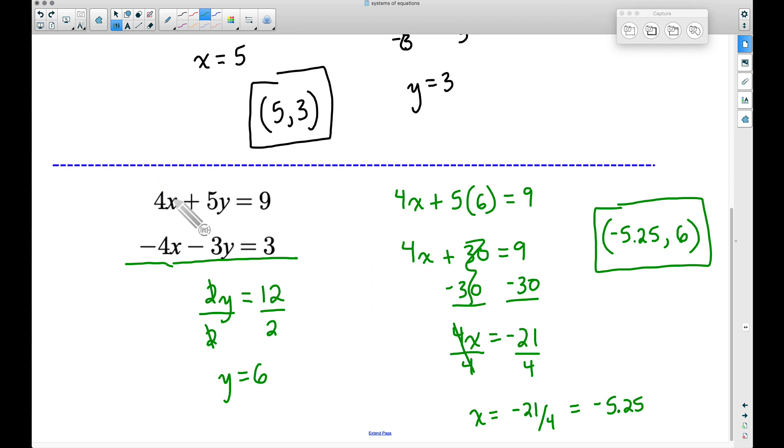However, it's negative 21 because we are multiplying by a negative 5.25. So we have negative 21 plus 30, because 5 times y is 5 times 6. Negative 21 plus 30 does give us 9. Perfect.